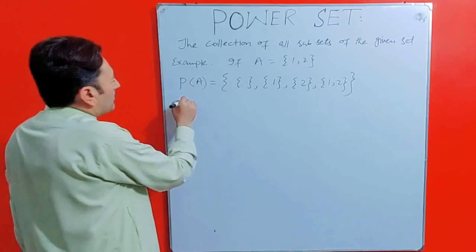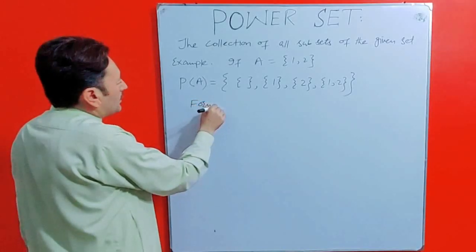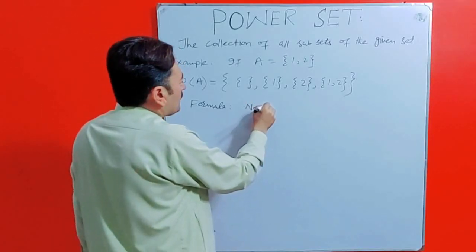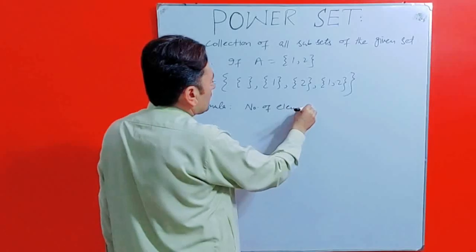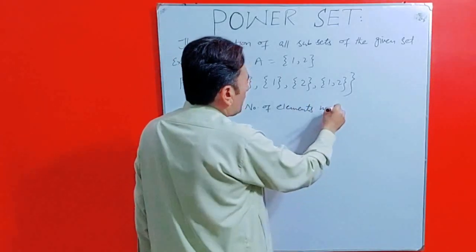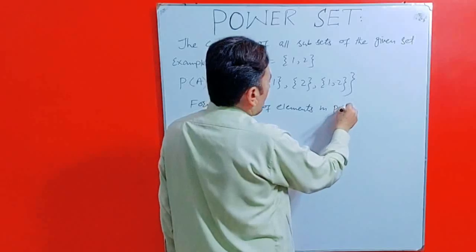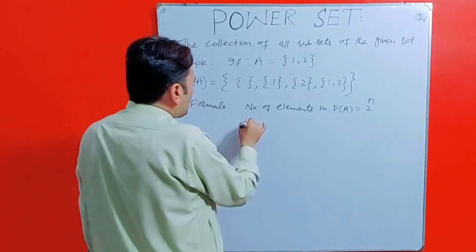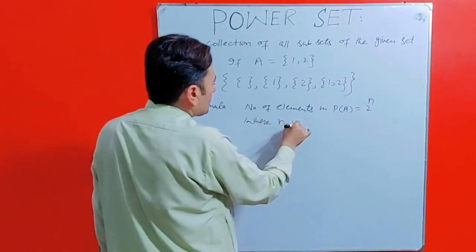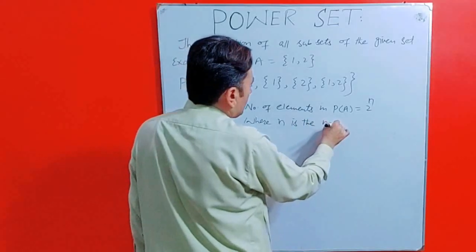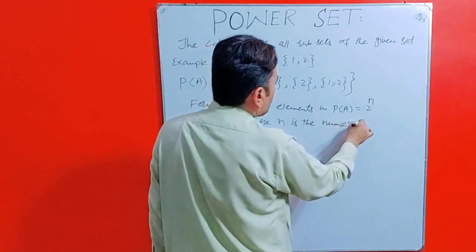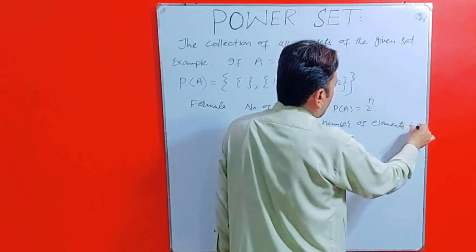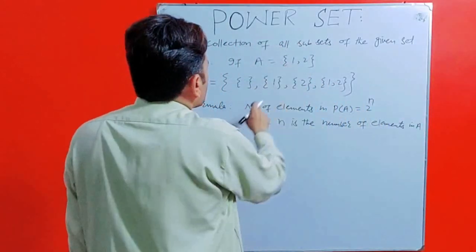Let us verify the formula. The formula is number of elements in power set of A is equal to 2 raised to the power n, where n is the number of elements in A. This n represents number of elements in set A.